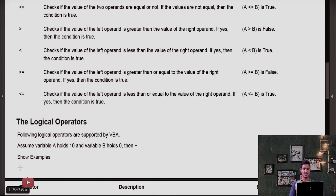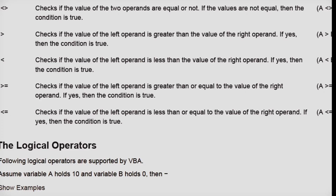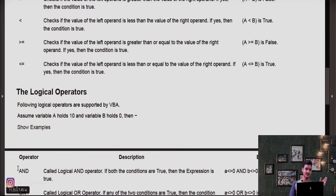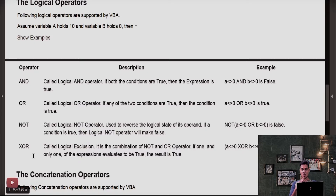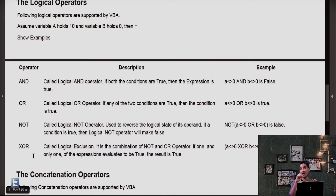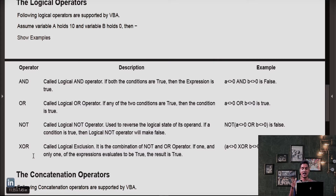Now let's discuss logical operators. Logical operators also return true or false results. We take A as 10 and B as 0. For the AND operator: if any value from the AND expression is false, the output is false. Testing A not-equal-to 0 is true, but B not-equal-to 0 is false since B is 0. So the result is false.